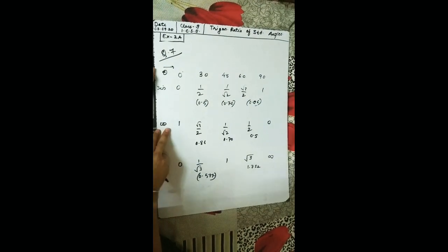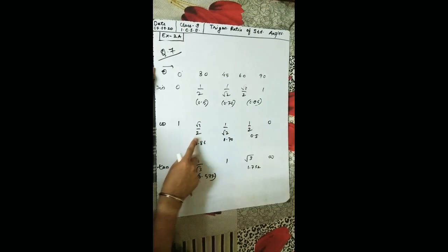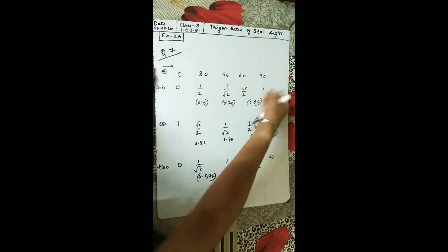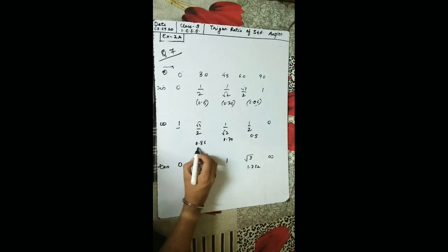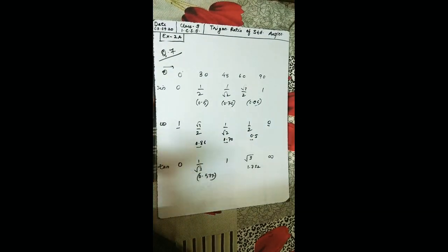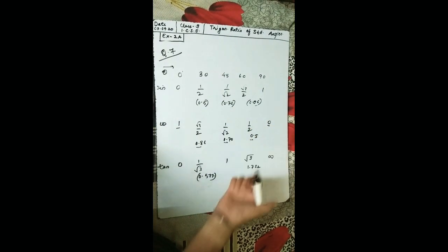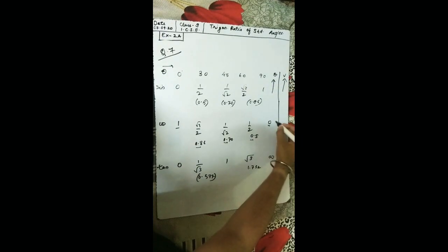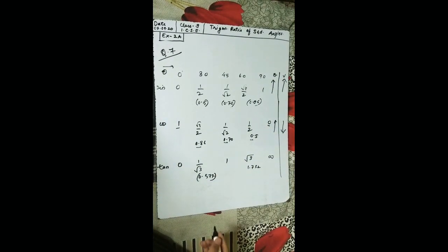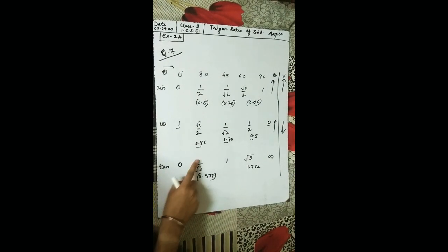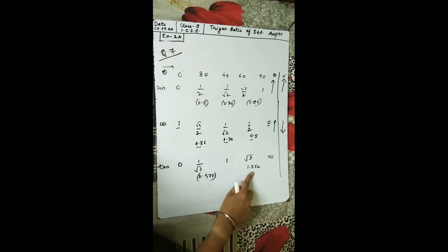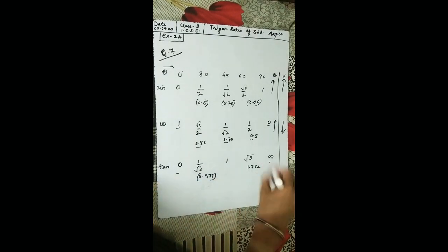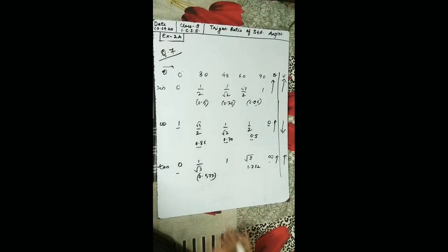For tan: 0, 1/√3, 1, √3, infinite — as θ increases, tan also increases. So for sine and tan, as θ increases the value increases; for cos, as θ increases the value decreases. For example, sin 90° > sin 70°, but cos 10° > cos 70° because cos decreases.